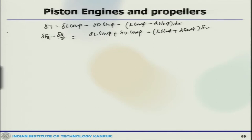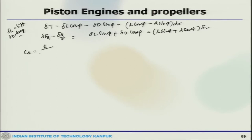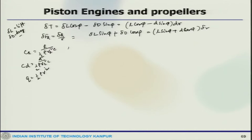Here δl is the lift and δd is the drag force on the blade element. Introducing the definitions of lift and drag coefficients C_l and C_d with the dynamic pressure q: C_l = l / (½ρV_r²·c), C_d = d / (½ρV_r²·c), where q = ½ρV². The relative velocity V_r = V(1 + a) / sin φ.